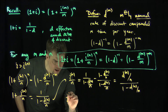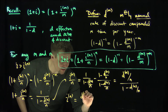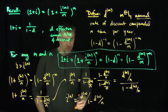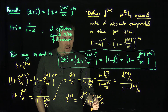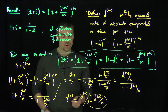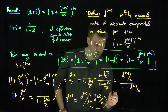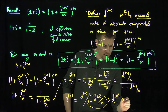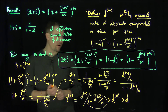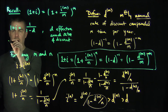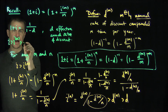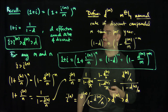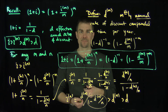Multiplying through by n, we conclude that i^(n) = d^(n) / (1 - d^(n)/n). Since the denominator is less than 1, i^(n) is strictly greater than d^(n). By similar reasoning, d^(n) is greater than d. So we have this important string of inequalities: i > i^(n) > d^(n) > d, which relates the effective annual rate of interest, the effective annual rate of discount, and the nominal rates of interest and discount. Thank you very much.